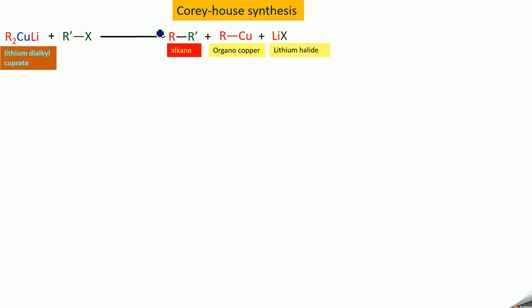In Wurtz's reaction, we said we are getting an alkane with an even number of carbon atoms only. But here we can prepare an alkane with any number of carbon atoms — for example, we can even prepare propane. That is the importance of this reaction.